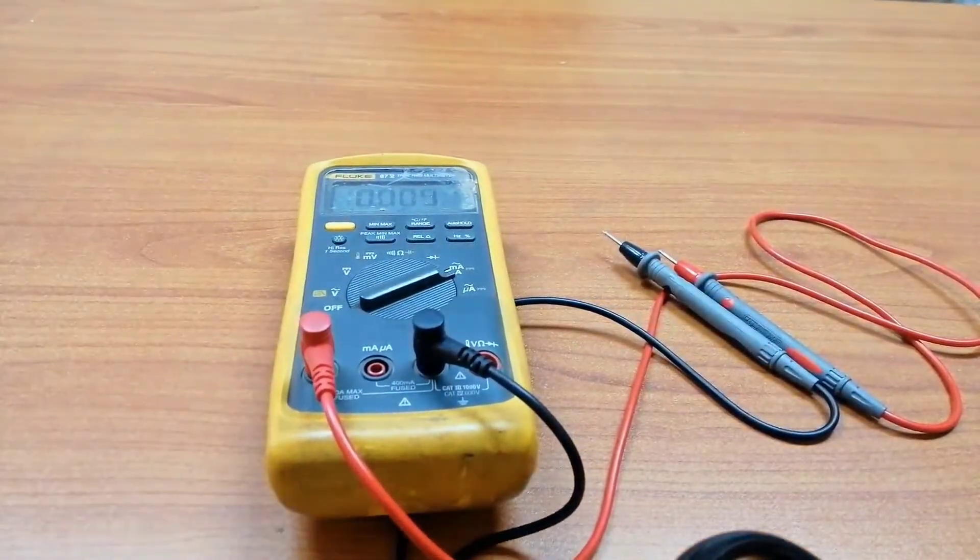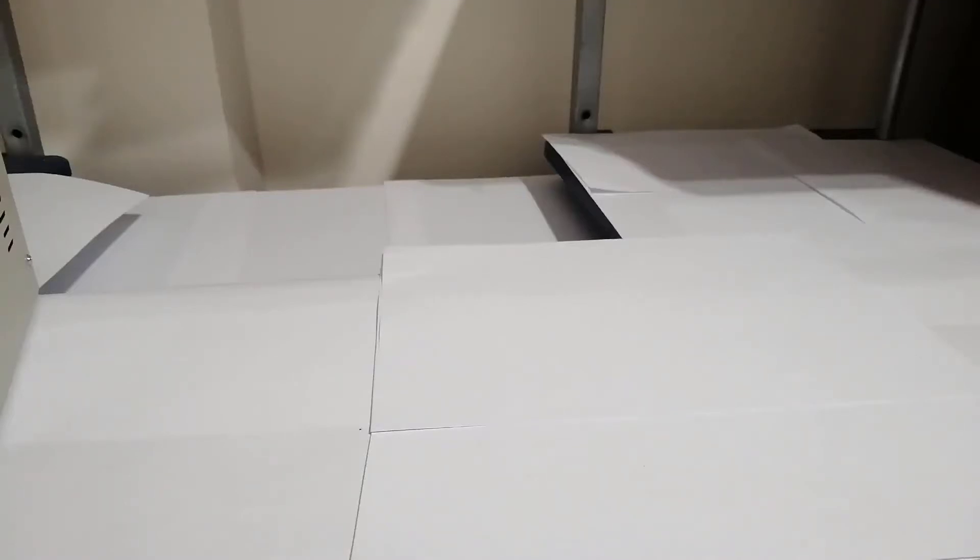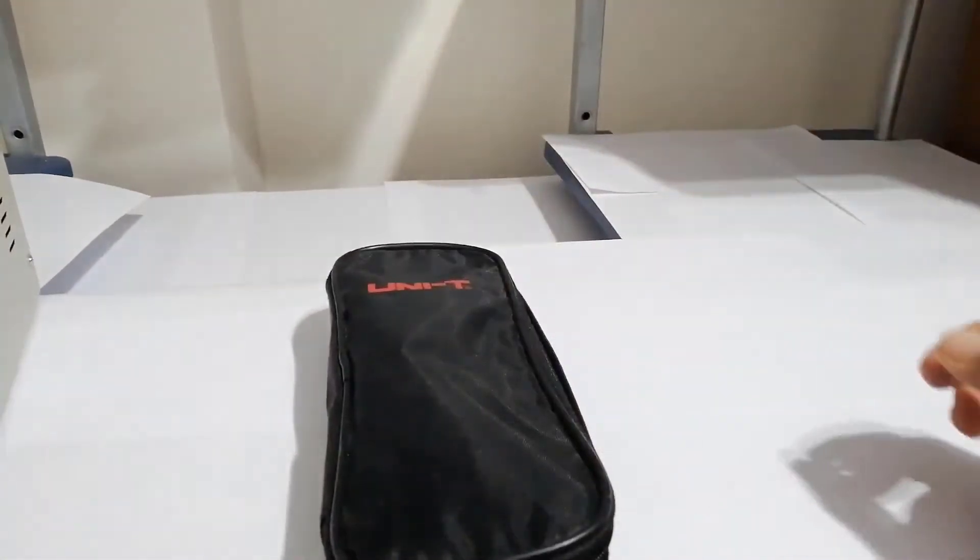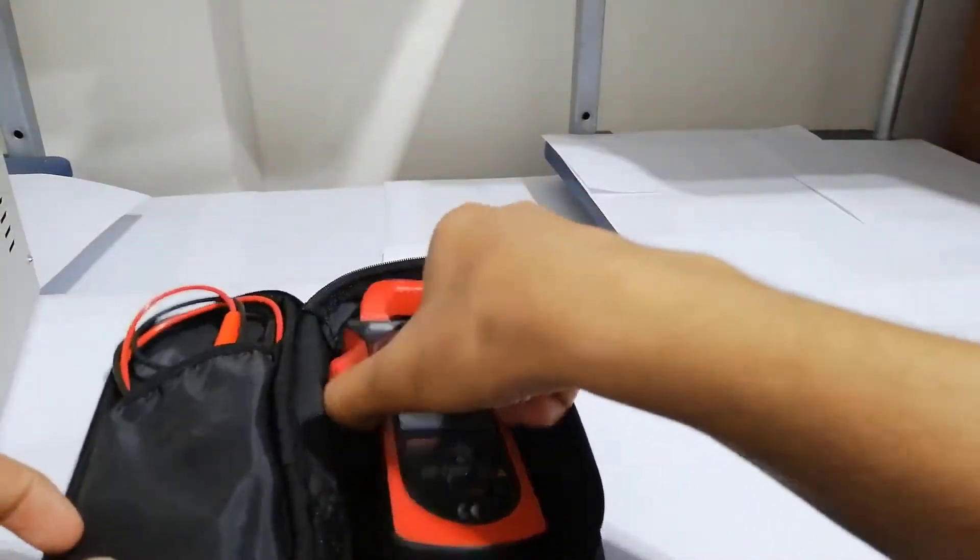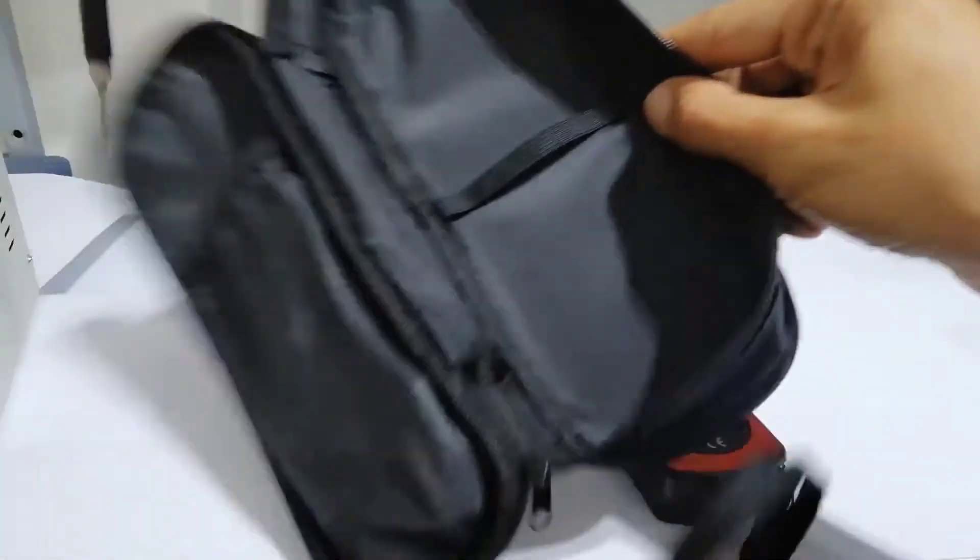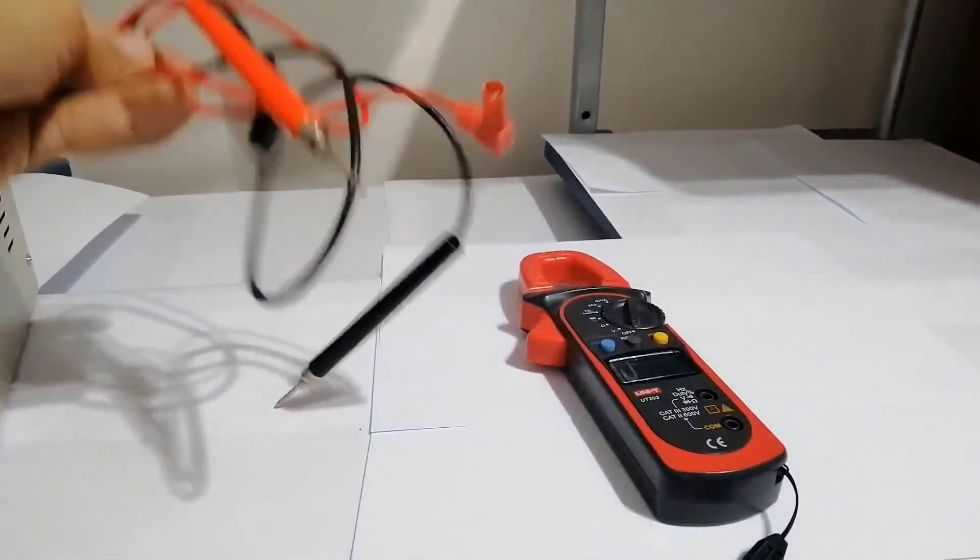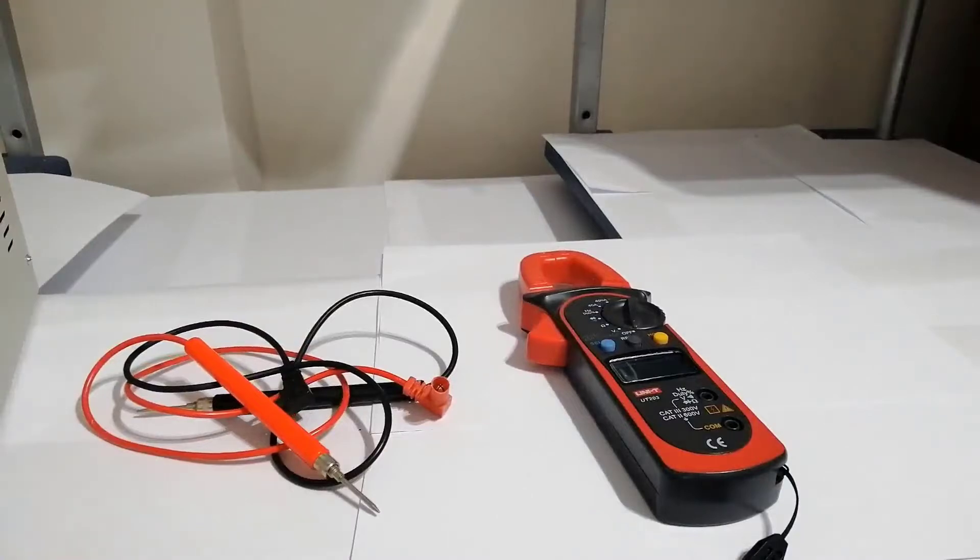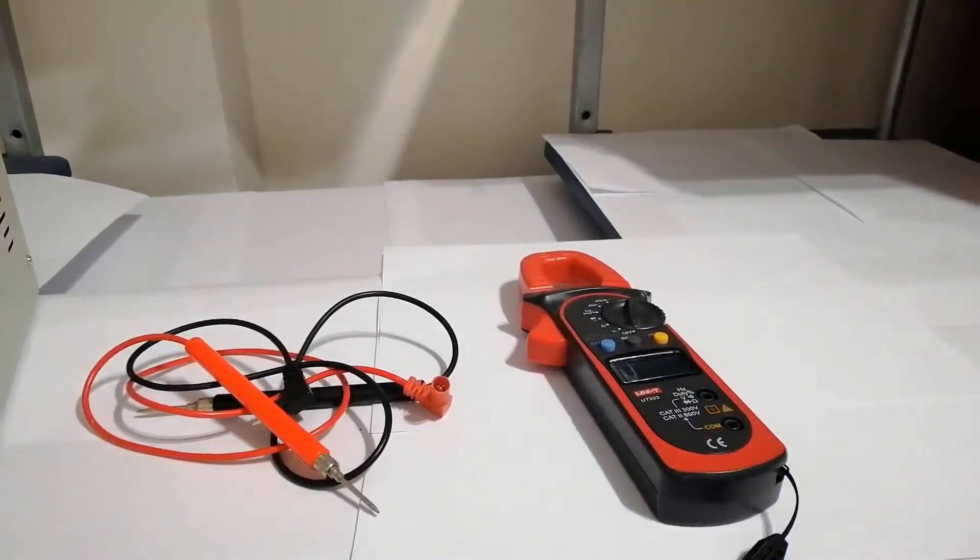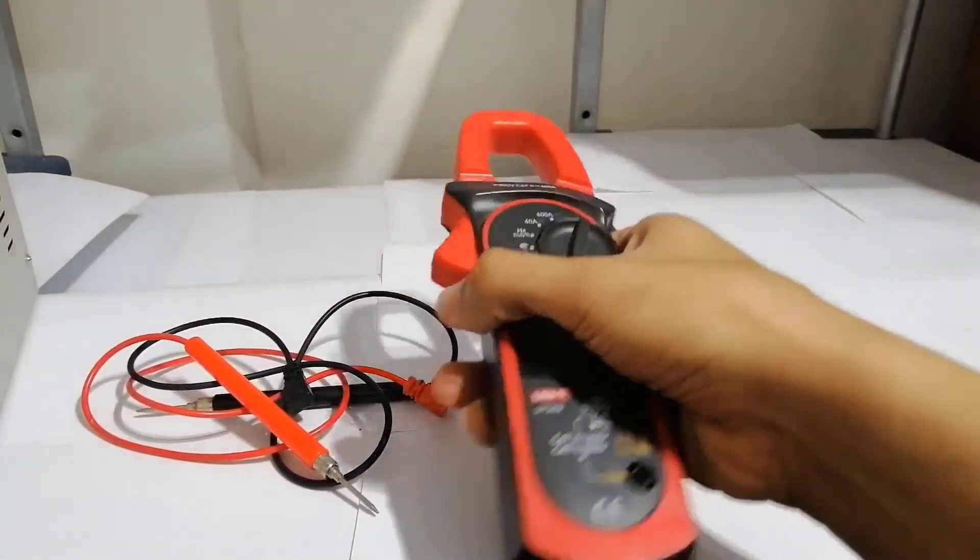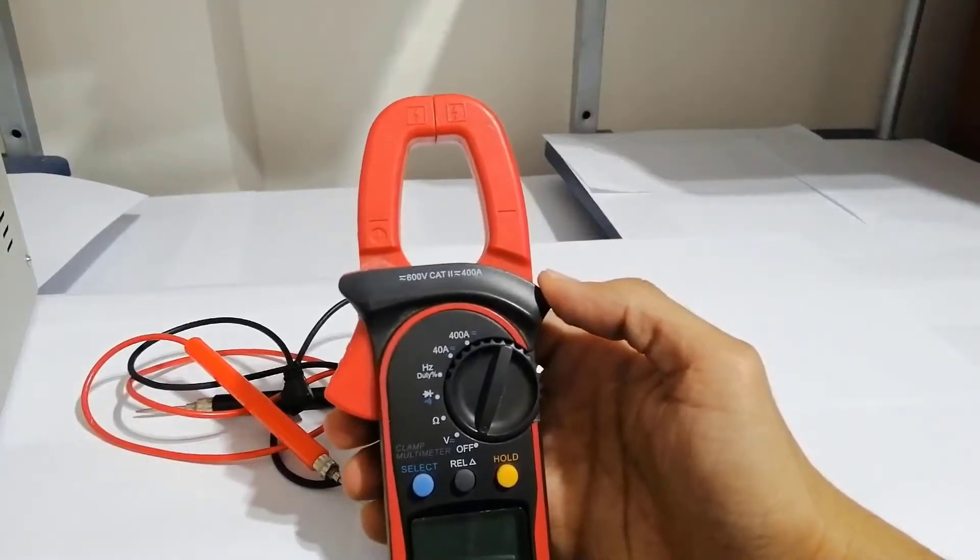We saw now this ordinary multimeter or avometer. Here we could have another type of avometer, which is the clamp meter. This clamp meter is just like the ordinary avometer in measuring voltage and resistance, but it's different in measuring current.